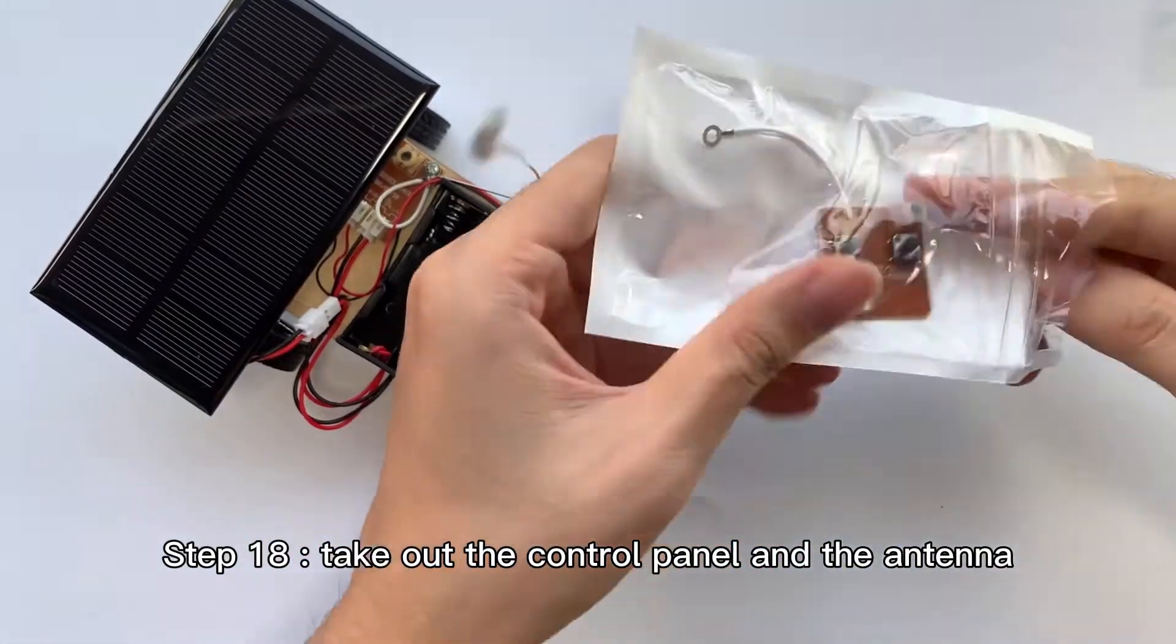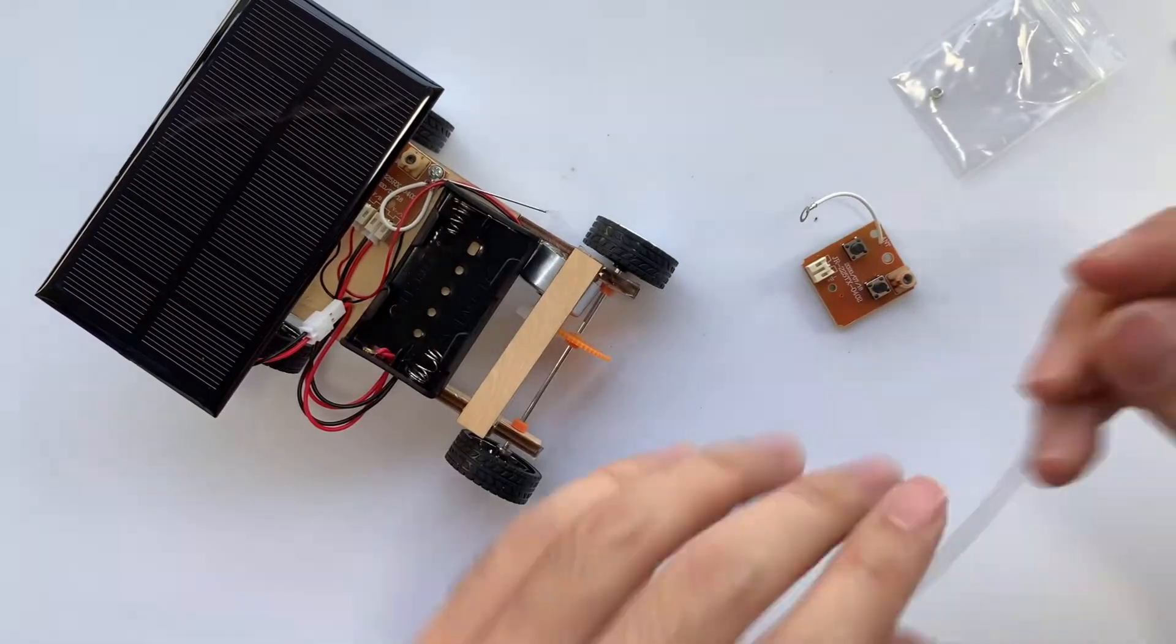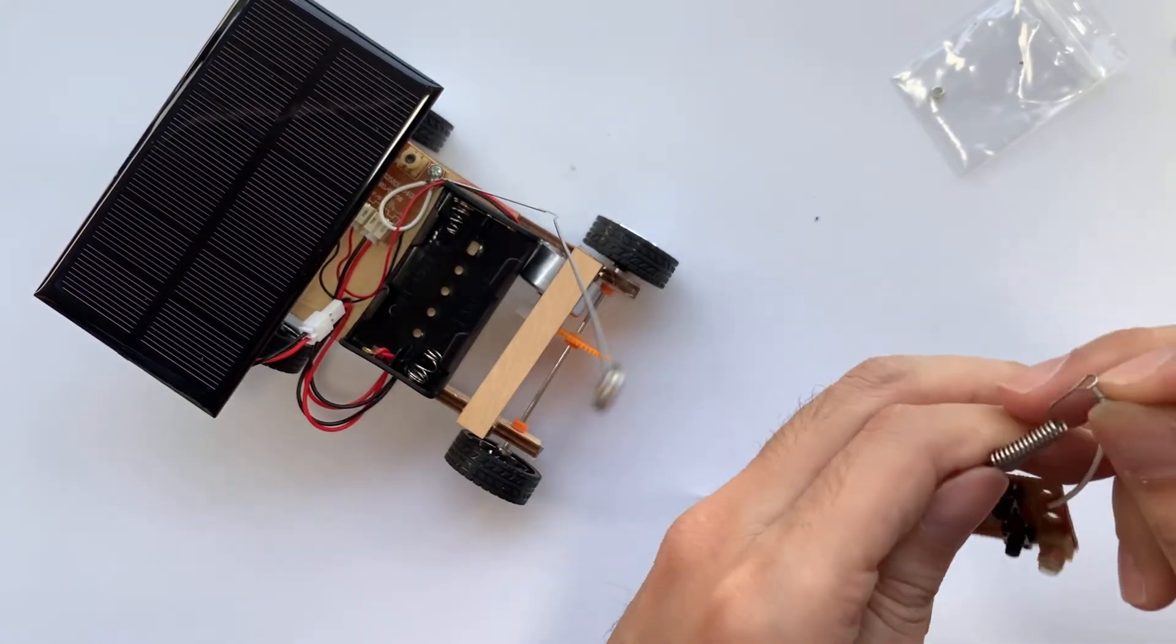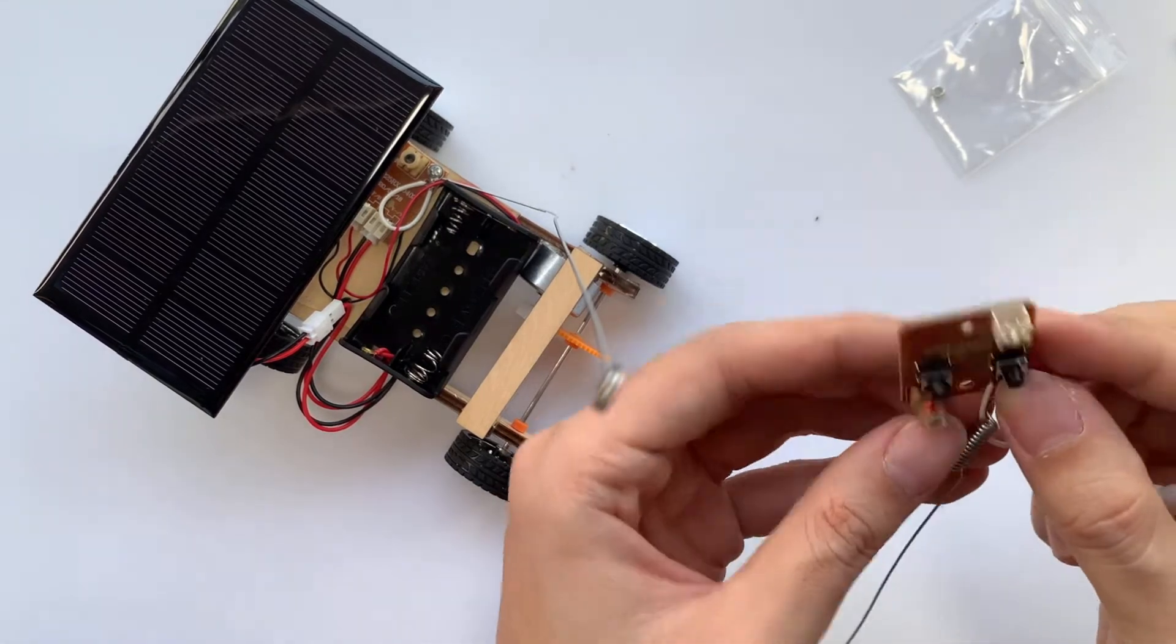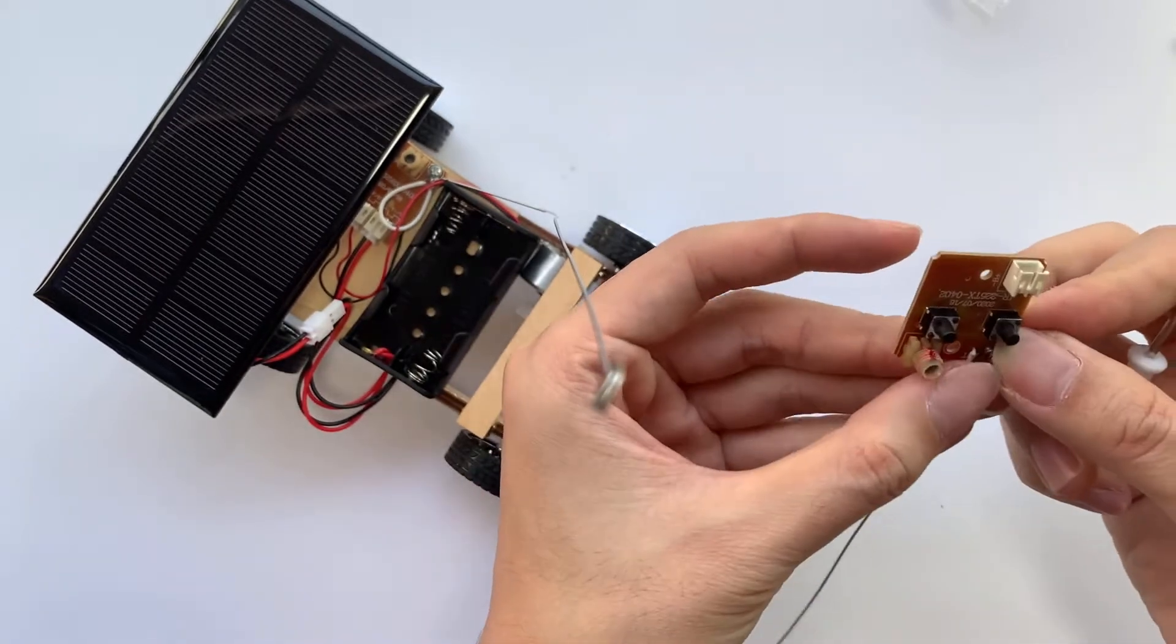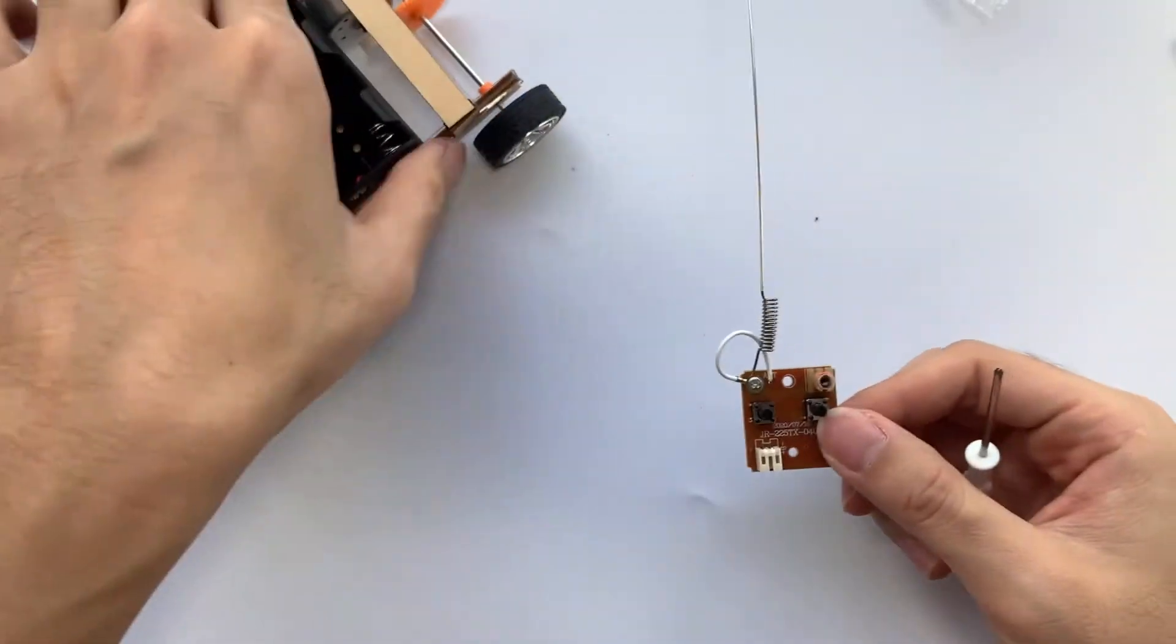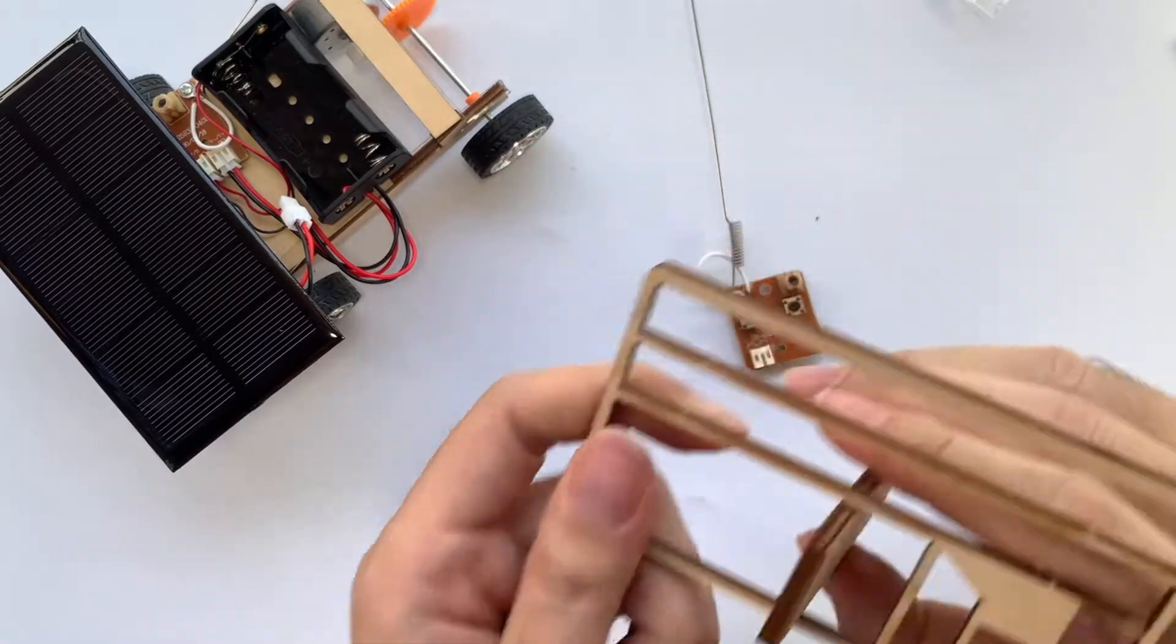Step 18: Take out the control panel and the antenna, the I-shape one. Make it straight. And then install it with the left screw and nut. Use the screwdriver. Okay, done. Take out the wood piece G from the wooden board, the last one.